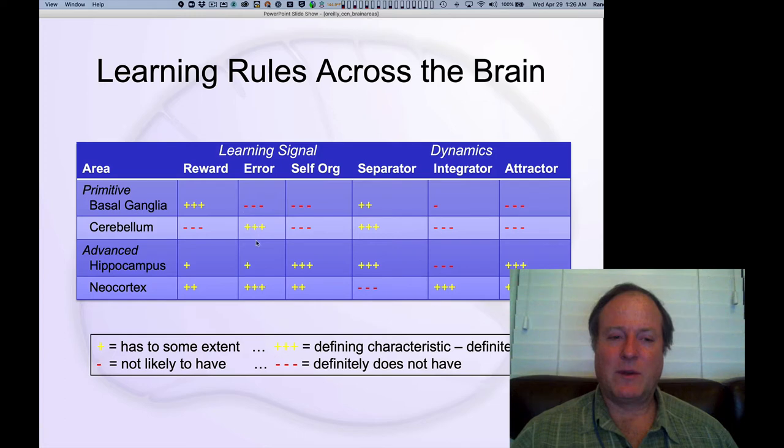This is a very high-level summary obviously, but it gives us a good sense of why we might have specialization not just according to content area in the brain, but also in terms of the kinds of signals that drive learning.